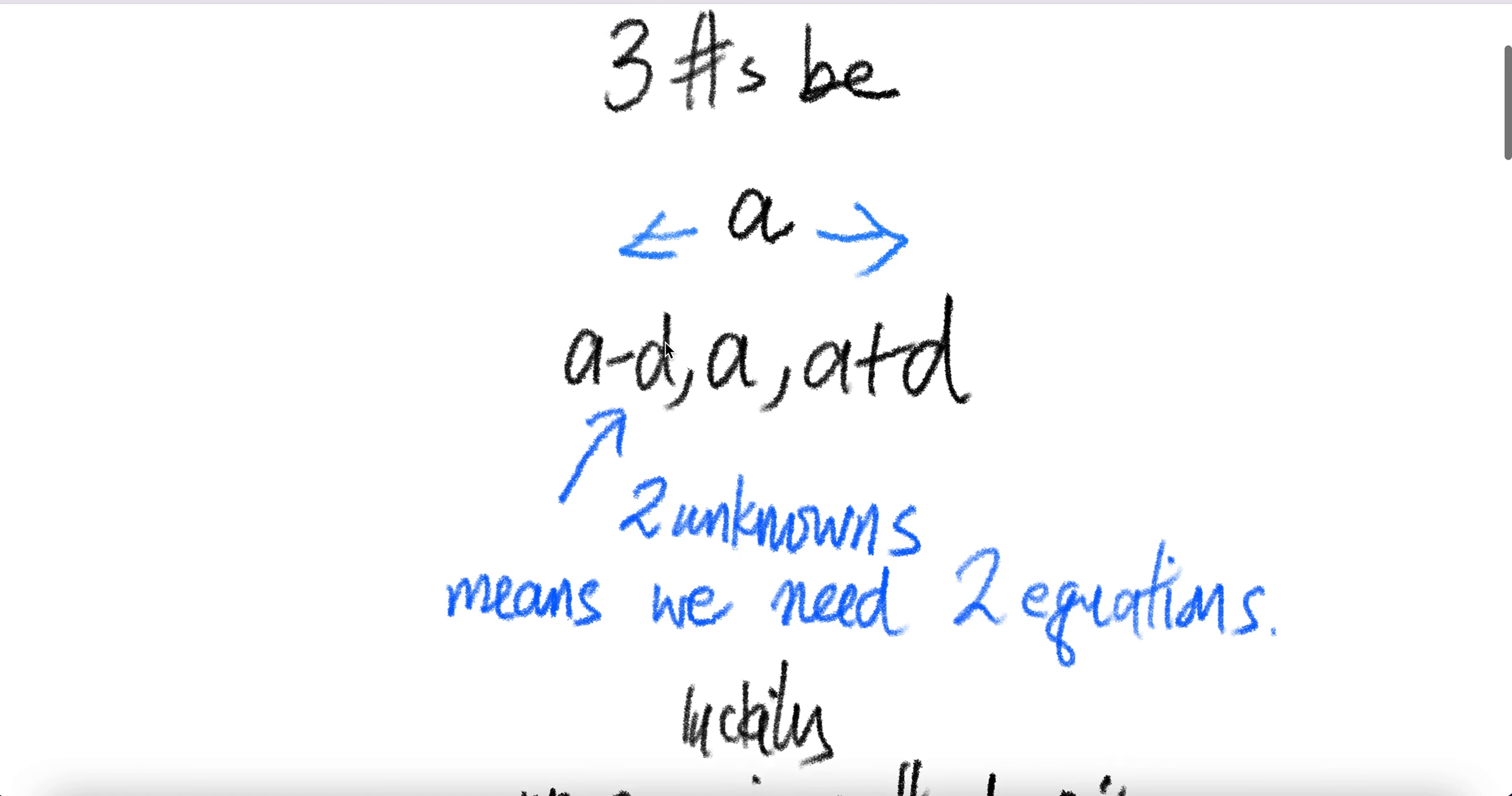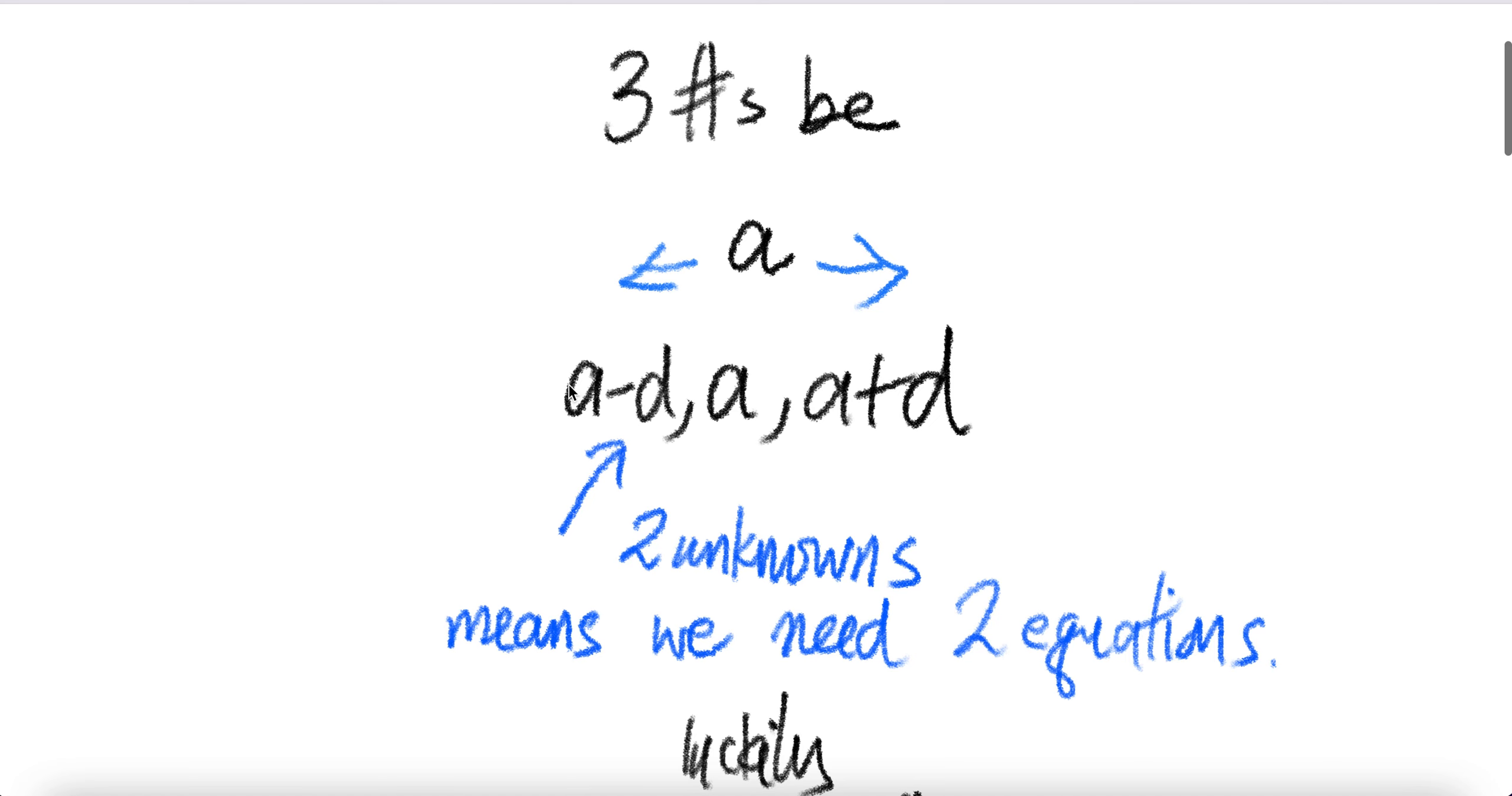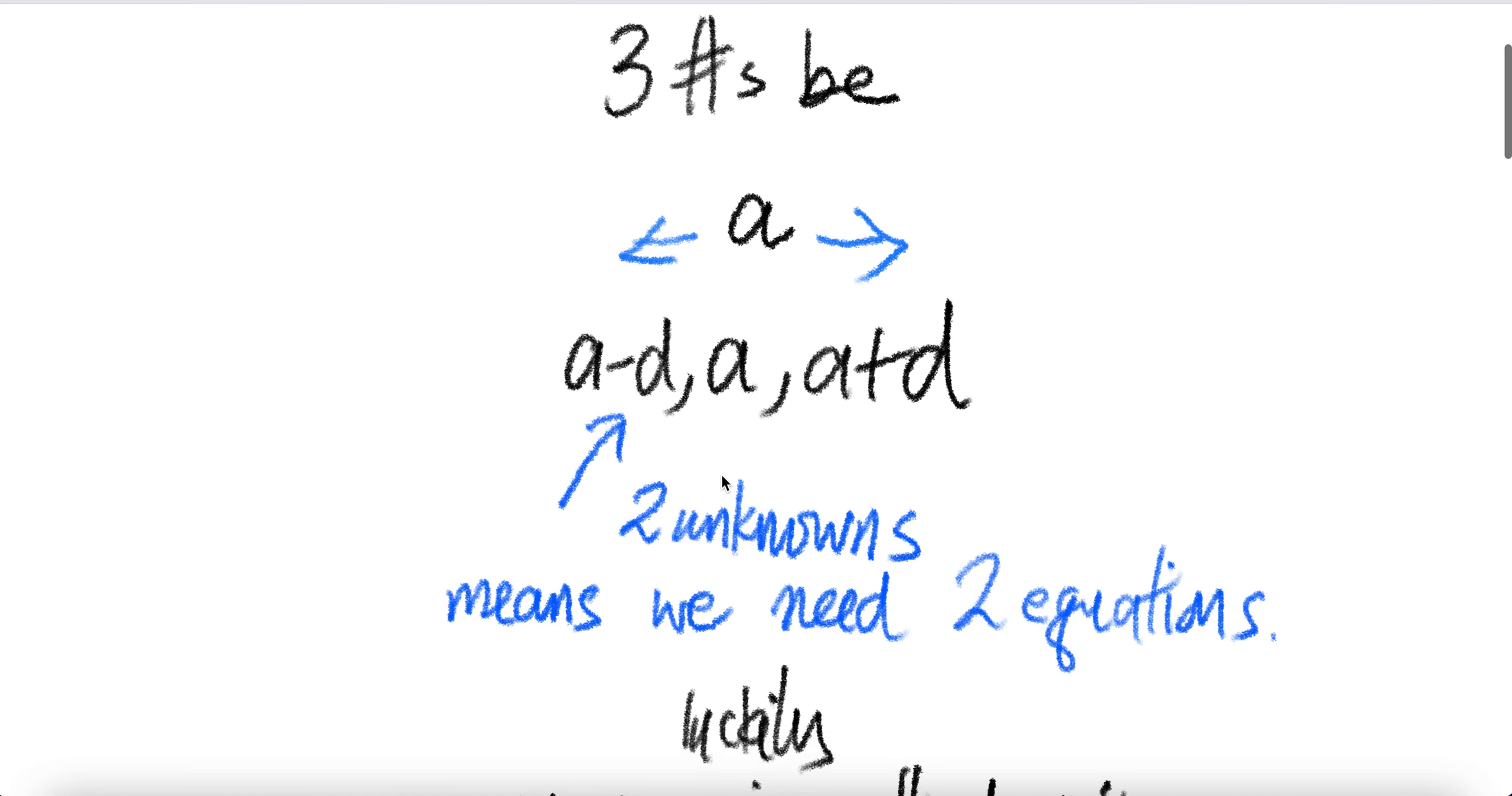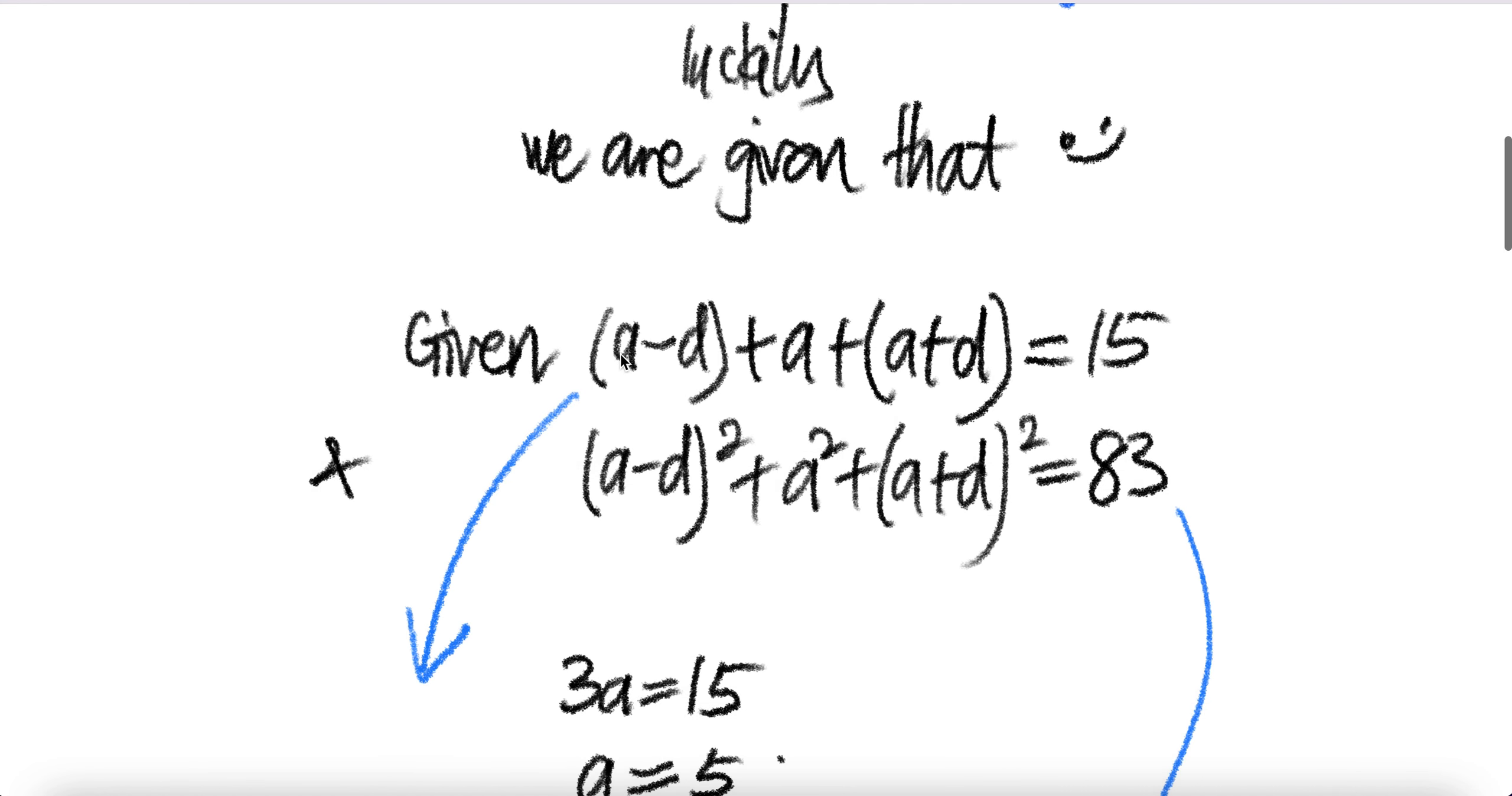So now in order to know the three numbers, we need to know A and D. So there are two unknowns here, A and D. When we have two unknowns to get the value of the two unknowns, we need two equations, two independent equations. Luckily, we are given that. We are given that the sum of the three numbers is 15, and the sum of the squares is 83.